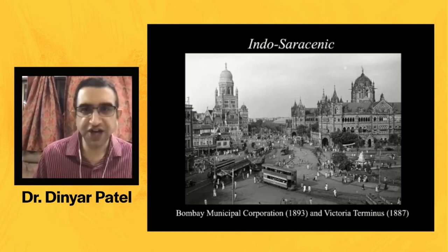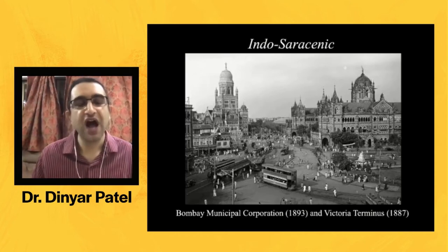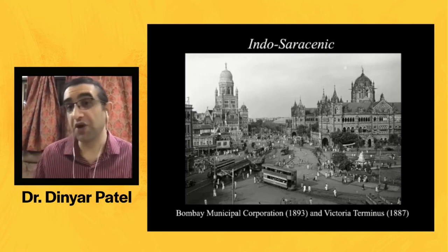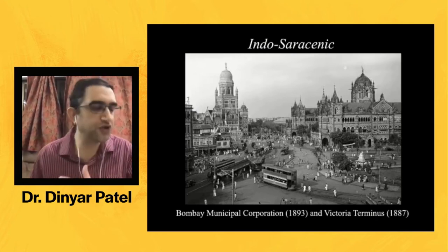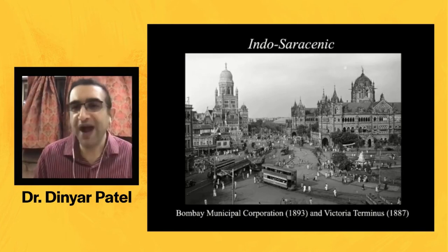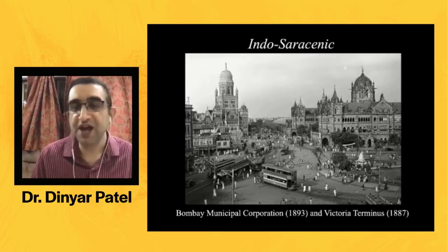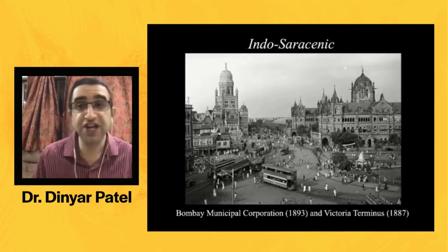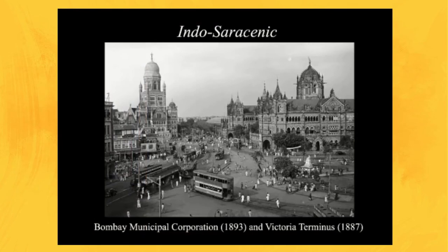Indo-Saracenic was a multi-headed creature that ran the gamut in styles used. In Bombay, Gothic styles of architecture — in particular Venetian Gothic — and ideas borrowed from critics like John Ruskin played a very dominant role. If you go around parts of southern Mumbai today, many buildings have artistic lineages going back to Gothic buildings in Venice, like the Doge's Palace, because these were the styles favored in Great Britain at the time and were therefore exported to India as well.